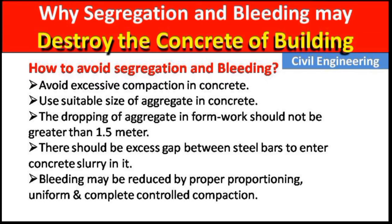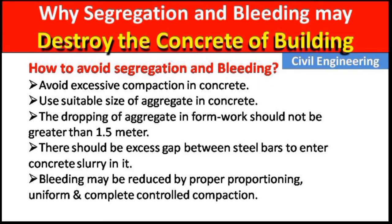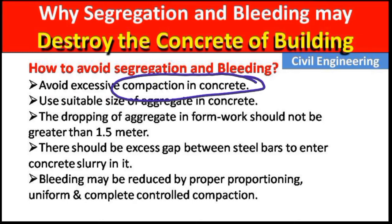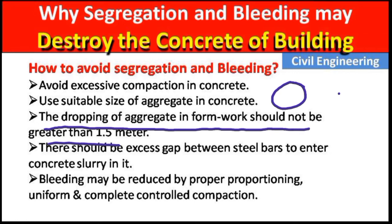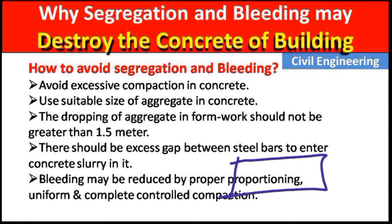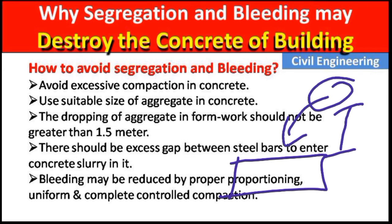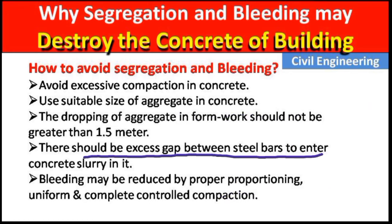Now, how to avoid segregation and bleeding? Avoid excessive compaction of the concrete. Use a suitable size of aggregate — do not use very large or very fine aggregate to make concrete. The dropping of aggregate into the formwork should not be greater than 1.5 meters; if this is the floor, we should not pour the concrete from more than 1.5 meters height.